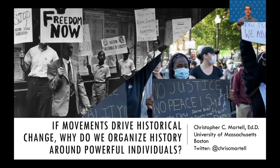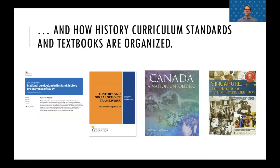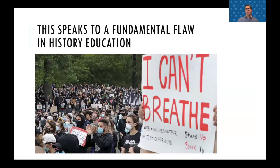My provocation asks the question: if movements drive historical change, why do we organize history around powerful individuals? If you go into any history classroom in the English-speaking world on any given day, you're likely to see students engaged in units organized around powerful rulers — Caesar in ancient Rome, the pharaohs of ancient Egypt, Victoria in England, or in the United States, units organized around presidents, such as the Age of Jackson. But I'd like to argue that this speaks to a fundamental flaw in history education: that we routinely focus on the acts of powerful individuals, rather than the common people who often organize in movements for change.